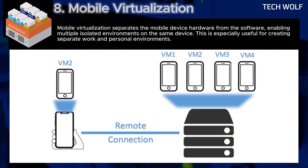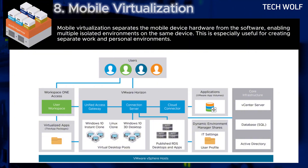The eighth virtualization type is mobile virtualization. Mobile virtualization separates the mobile device hardware from the software, enabling multiple isolated environments on the same device. This is especially useful for creating separate work and personal environments. An example is VMware Horizon Mobile, which allows IT administrators to create a secure, isolated work environment on an employee's smartphone. Employees can switch between personal and work profiles without risking data leakage between them.